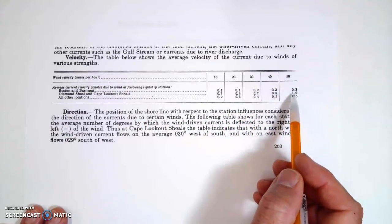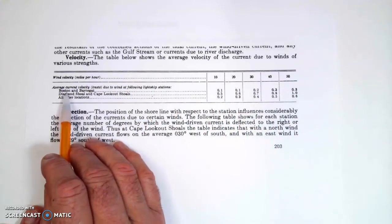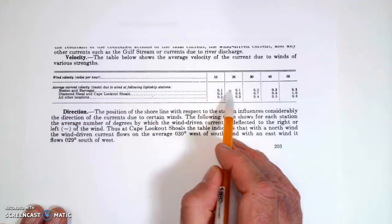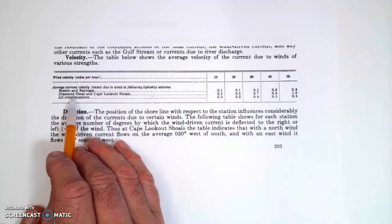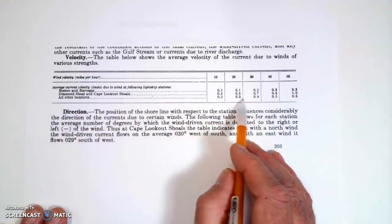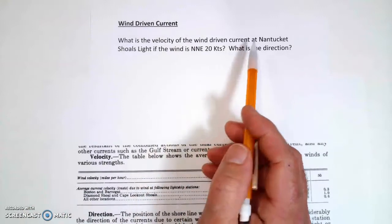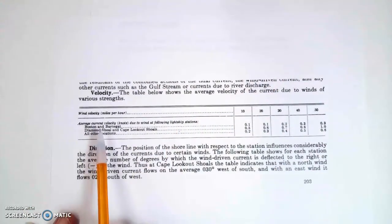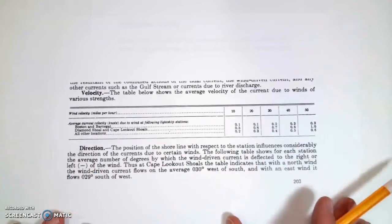and then this is going to be the speeds of the current driven by the wind, and then it's for three locations. So it's Boston and Barnegat Bay. I'm going to use this row for Diamond Shoal and Cape Lookout Shoals here, and any other location, I would use the third row. So based on my questions, Nantucket Shoals is not this, it's not this. It's going to be all other locations. I'm going to be using the third row.